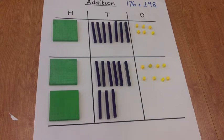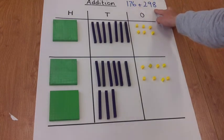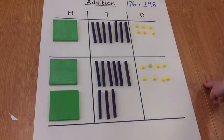This is the concrete method for addition. To calculate 176 plus 298, we have to lay out using Dean's blocks.